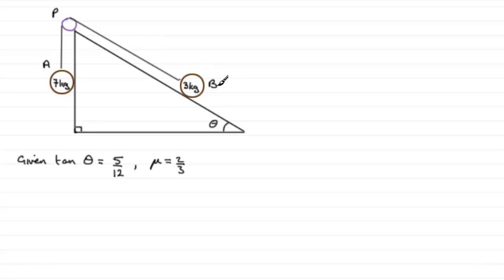So to start off, what I want to do is first of all put the forces on our particles A and B. If we take the particle A first of all, it's got a mass of 7 kilograms, so there's going to be a weight acting downwards of 7g Newtons. Let's just mark that in then, 7g Newtons. There'll be a tension acting upwards, provided by the string here. Let's call it T, T Newtons.